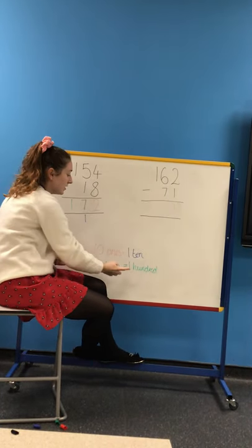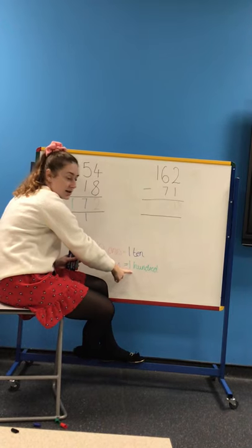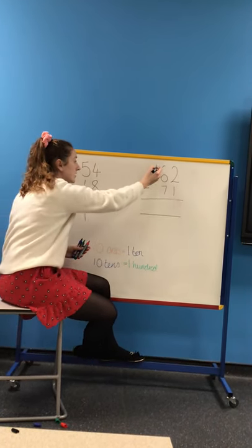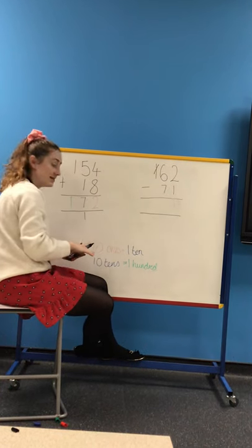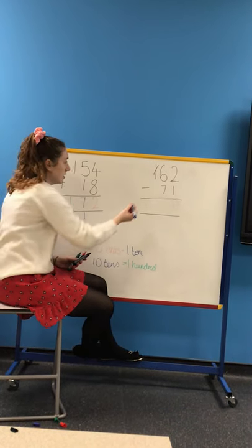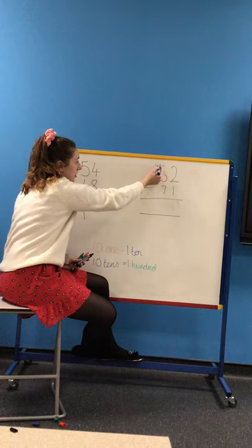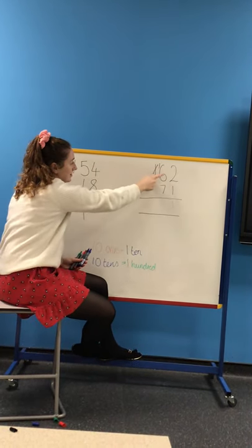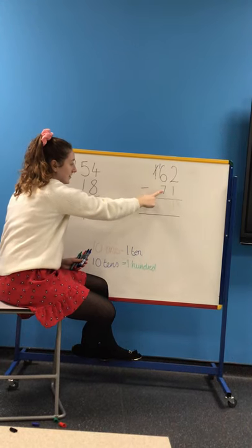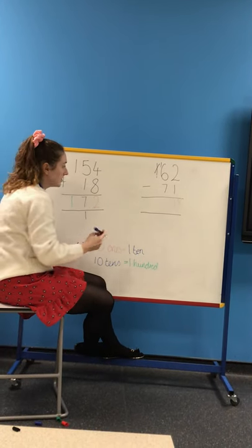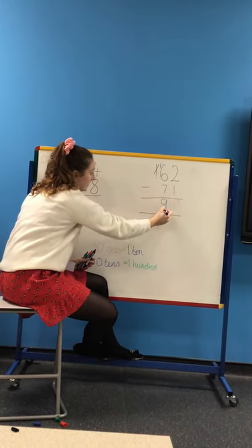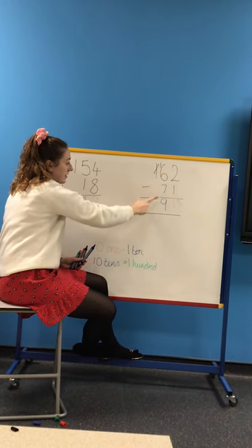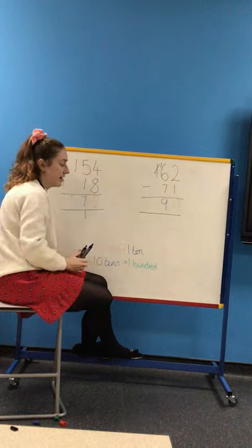So we have a 100 here, and we know down the bottom here that 100 is equal to 10 tens. So what I can do is I can cross this one out, and instead of having 100s, I'm going to put a 10 here to show that I've got 10 tens. So I've now got 16 here, take away the 7, which I can do, so that will give me 9. And then just double-checking the hundreds column, there's nothing minus nothing, so we have a 0 there.